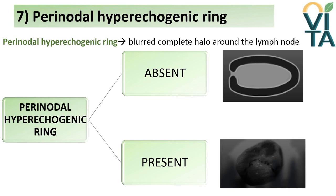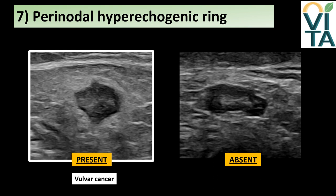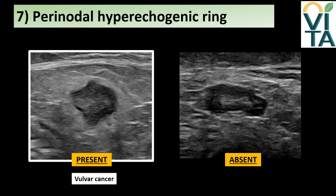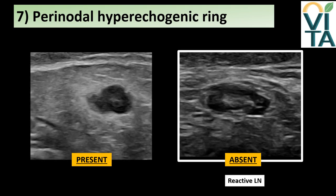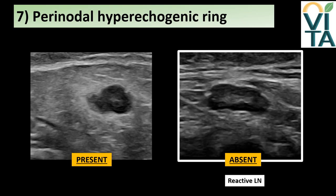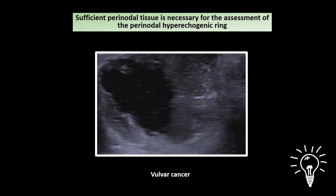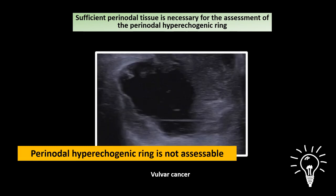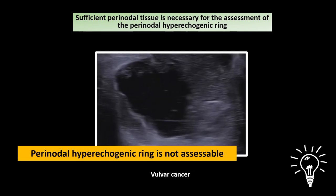A hyperechogenic ring is defined as a complete, blurred, thick halo around the lymph node, caused by desmoplastic perinodal tissue reaction around an infiltrated lymph node. It should be reported as present or absent. In videos from a vulvar cancer patient, a complete hyperechogenic halo with blurred underlying tissue around the lymph node is visible, while more distant perinodal tissue has normal appearance. On the right, a normal lymph node is surrounded by sharply demarcated hyperechogenic septa. To describe the perinodal hyperechogenic ring, sufficient perinodal tissue must be viewable — if not, it is defined as not accessible.